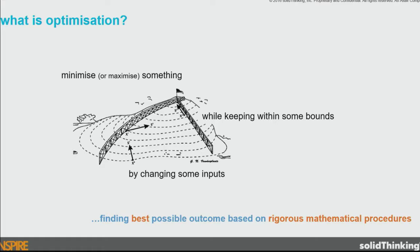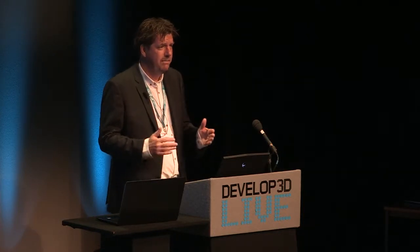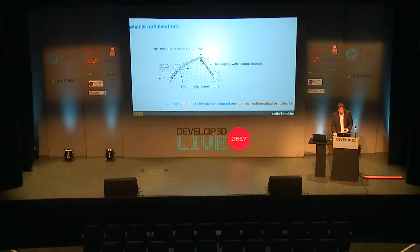Trying to keep it nice and simple, it's finding the best outcome based on rigorous mathematical procedures. In this example, it's going up the hill. You've got these different inputs — what angle you can go up the hill at — and you have to keep within bounds. You need to have rules for all that to find that peak. And the problem is you can only see your feet; you don't know what's over the next lump. Mathematical optimisation is about the best ways of finding the peak of that hill.